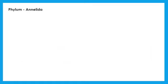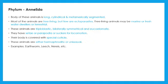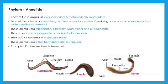The next phylum is Annelida. These are multicellular, triploblastic, eucoelomate animals having bilateral symmetry. The body is long and cylindrical. They have setae or parapodia — that is, necessary processes for locomotion. These are either hermaphrodite or unisexual. Examples include earthworm, Nereis, and leech.